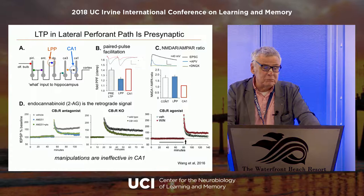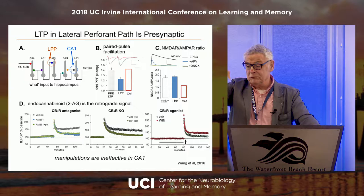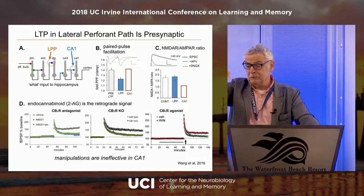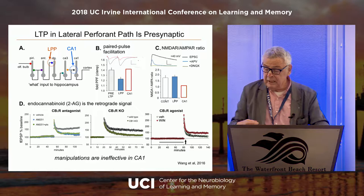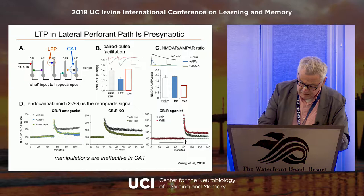The problem is you can block this LTP completely by buffering postsynaptic calcium or blocking NMDA receptors. So it's induced postsynaptically, just like in CA1, but expressed presynaptically. You need a retrograde messenger — and that proved to be the endocannabinoid 2-AG. So it's a strange kind of LTP right off the bat.